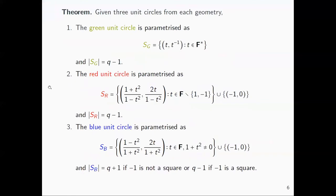We can parameterize the green unit circle simply as {(t, t⁻¹)} for all nonzero t in the field, so the number of elements on the green circle is q−1. Similarly, for the red unit circle, the parameterization is analogous to the usual rational parameterization. This is valid for all t except 1 and −1, since those would give division by zero. Every point on the red unit circle can be written in this form except (−1, 0), so the number of elements on the red circle is also q−1.